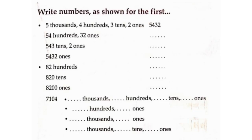Continuing the decomposition: 5,432 broken into 3 tens and 2 ones gives 5,432. Then 8,200 broken into 8 thousands, 2 hundreds, 0 tens — giving 8,200.